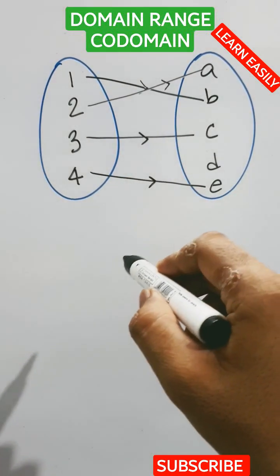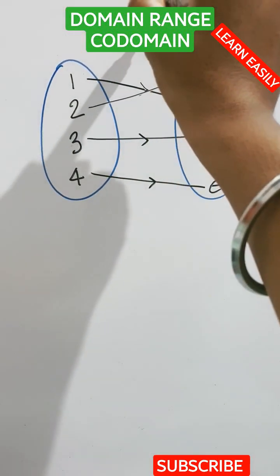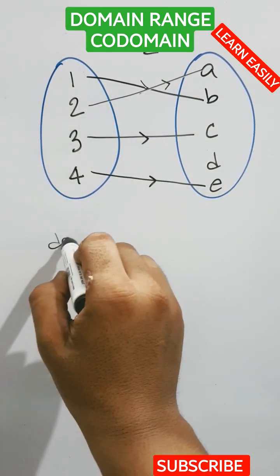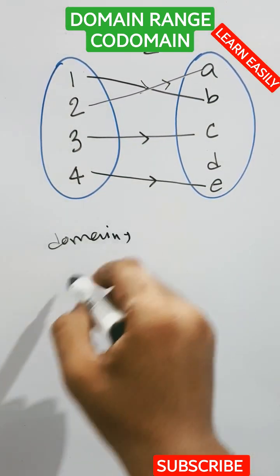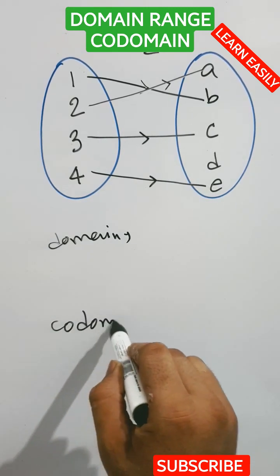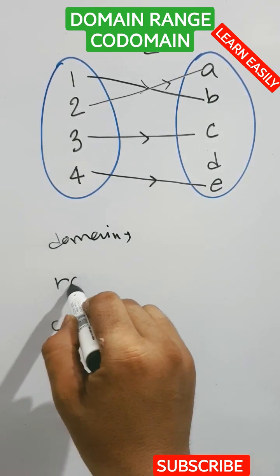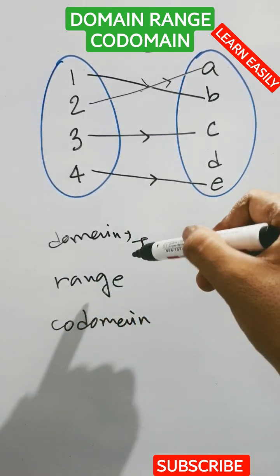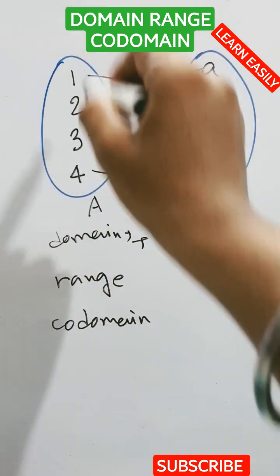Guys, welcome to Mr. Onko Shorts. Today we will learn some definitions of sets. So first of all, we will learn domain, and then codomain and range. Now, domain means the collection of the elements present in set A.